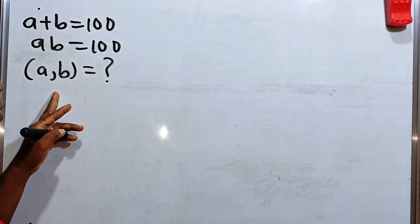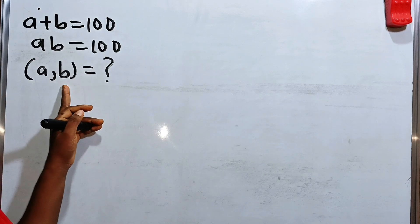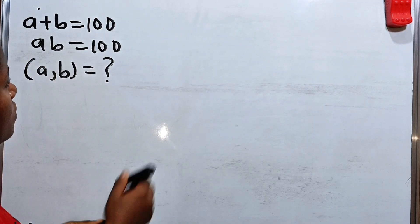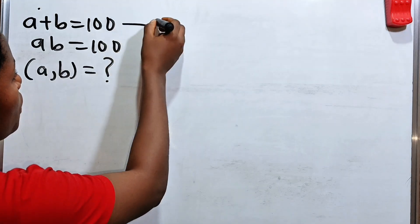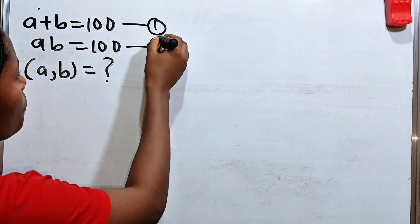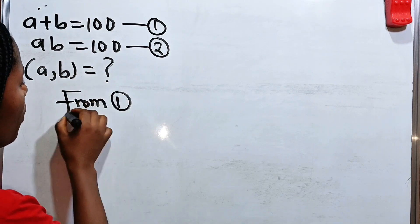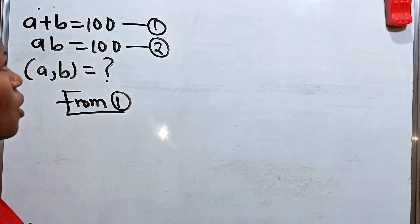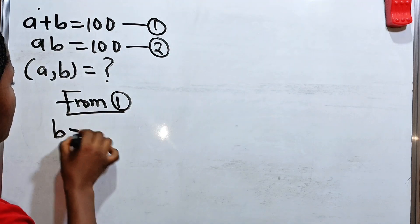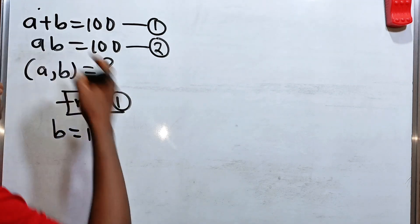Hi, in this video we are asked to solve for the value of A and the value of B. Let's call the first equation equation 1 and this one equation 2. From equation 1, we can see that B is equal to 100 minus A.